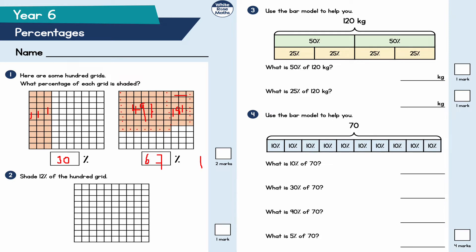This is question number two. I'm going to shade in one complete row and then two squares on the next row, just these two. So that is going to be 12 percent.